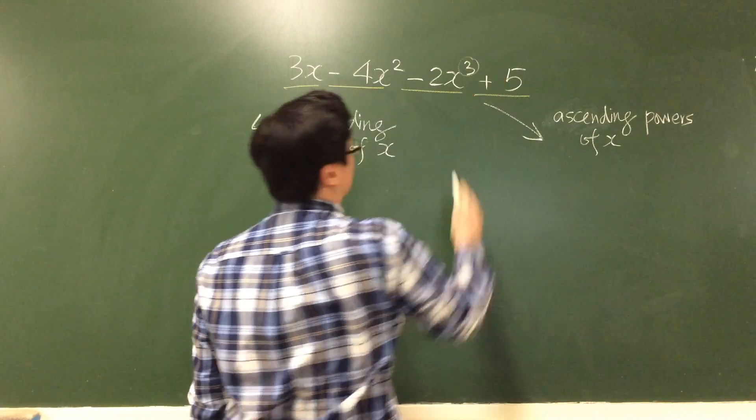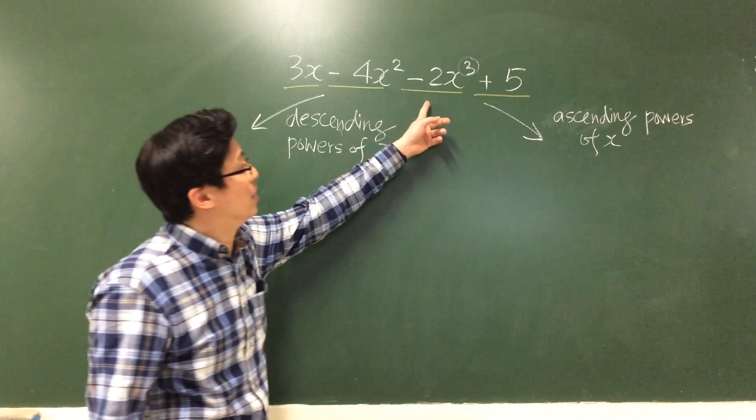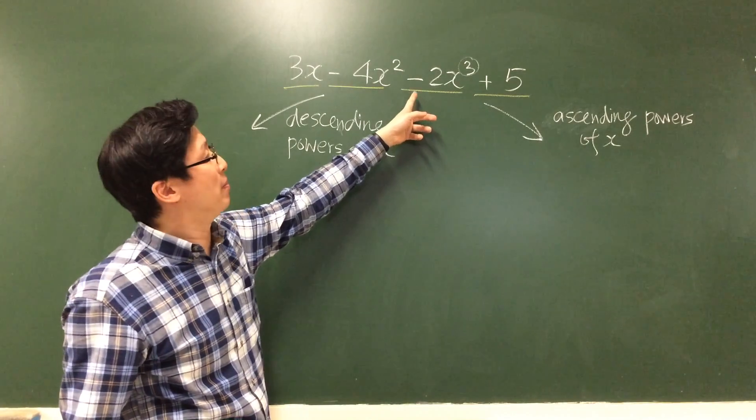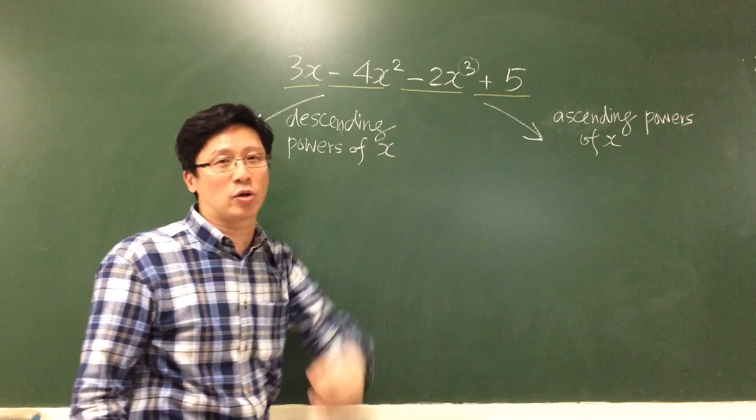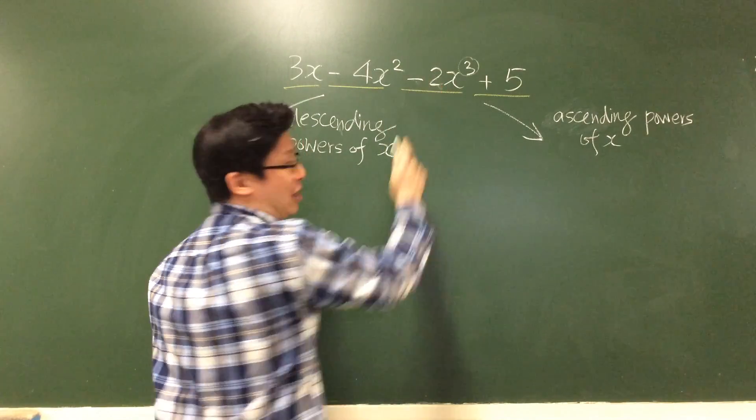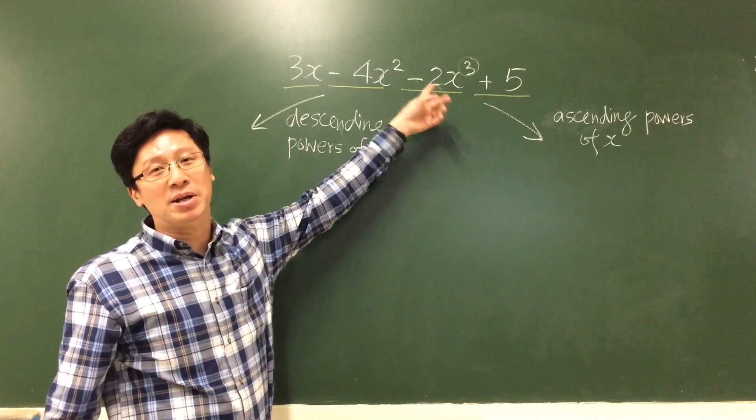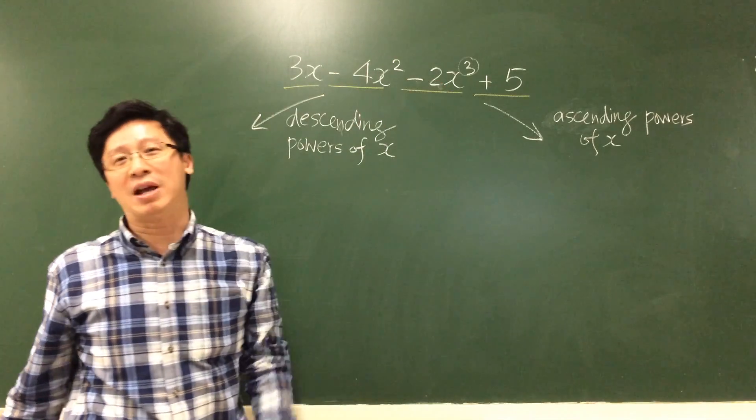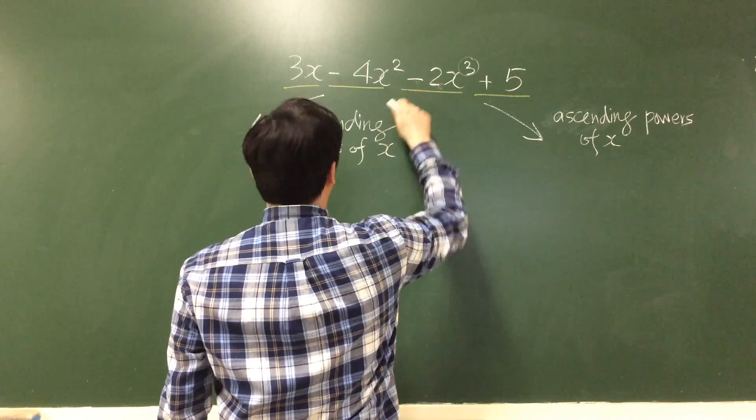That means there is power 3 here, so this will be the first term: negative 2x cubed. Don't forget the negative sign is attached to the number or variable that follows.